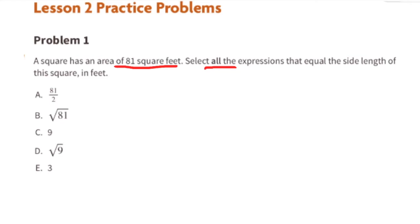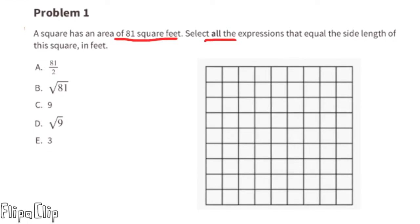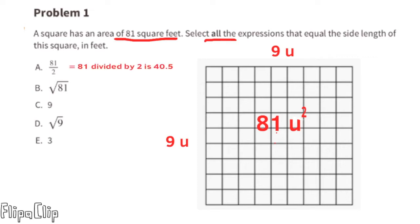Since the square has an area of 81 square feet, each side length would be 9 units, because 9 times 9 equals 81. So we can select all the answer choices that have the value of 9. Answer choice A is 81 divided by 2, and since 81 divided by 2 is not 9, we will not select A.